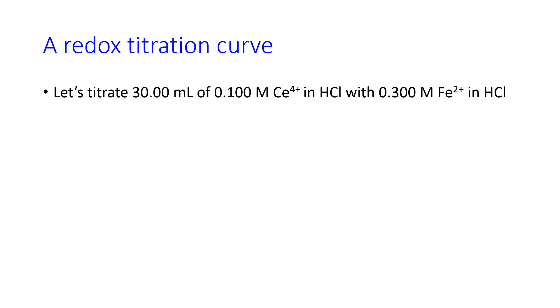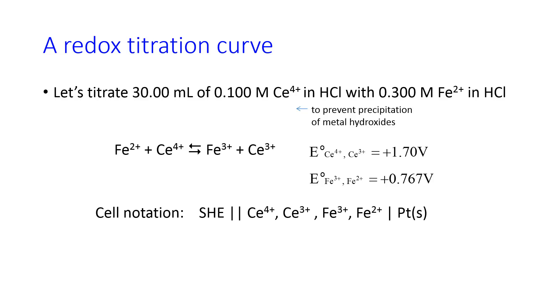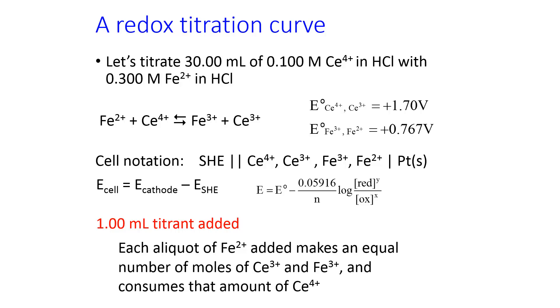So, an example of a problem that you could do, and we'll do this in class, is to titrate 30 mL of 0.1 molar Ce⁴⁺ in HCl with 0.3 molar Fe²⁺ in HCl. And the reason that we use HCl is to prevent the precipitation of metal hydroxides, which can form when there's excess hydroxide ions in solution. So, we have our balanced redox reaction. This is balanced with respect to mass and charge, so we don't have to do anything there. We have our two standard reduction potentials, which we saw earlier, and we have our cell notation. The E cell that we're going to use is the cathode reduction potential minus the reduction potential for the standard hydrogen electrode, which is 0. And so, to find E, we're going to use the Nernst equation.